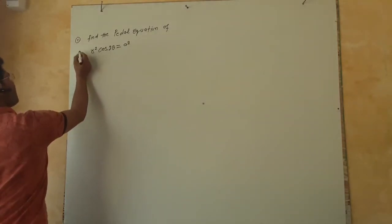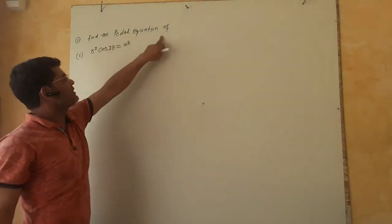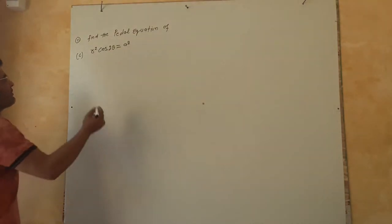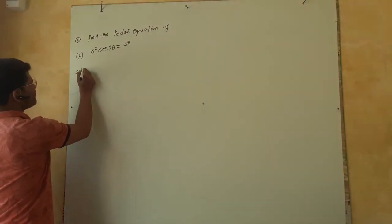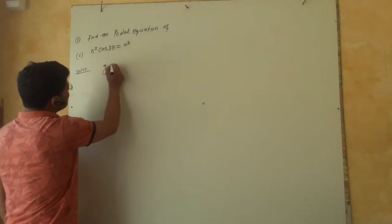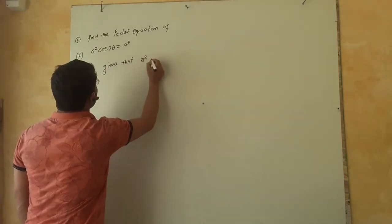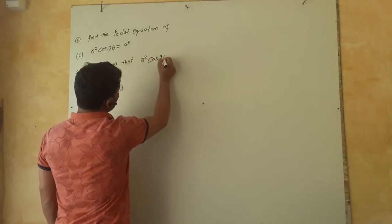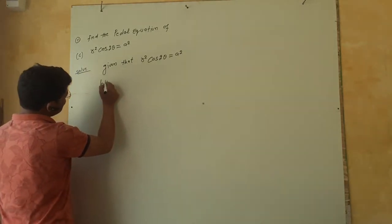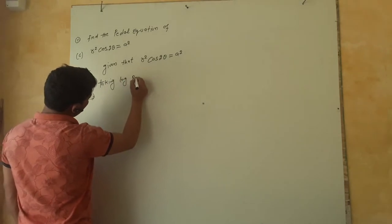Question number 11, part C. Find the pedal equation of R squared cos 2θ is equal to A squared. Given that R squared cos 2θ is equal to A squared. Taking log of both sides,